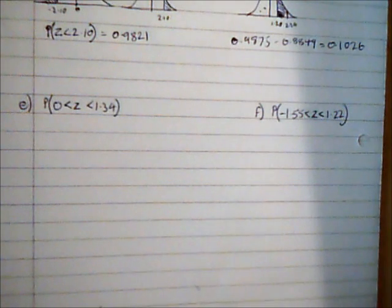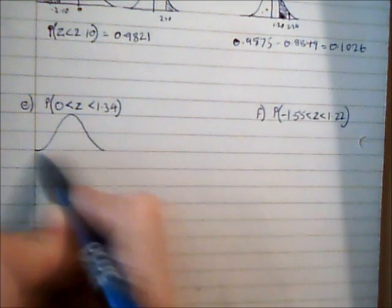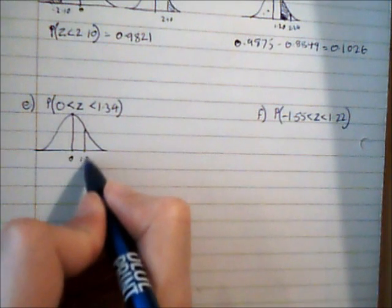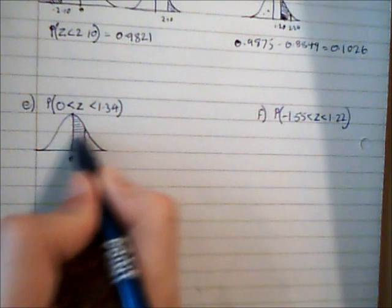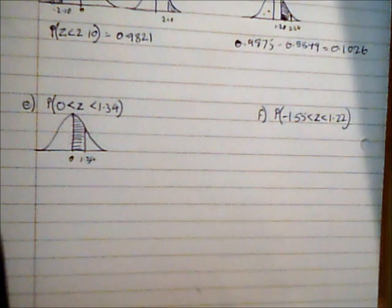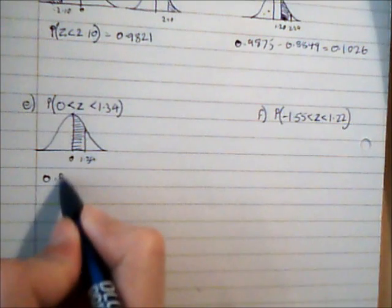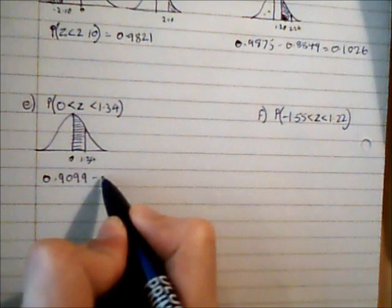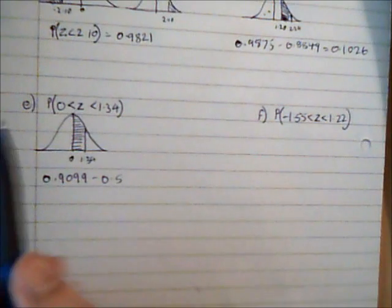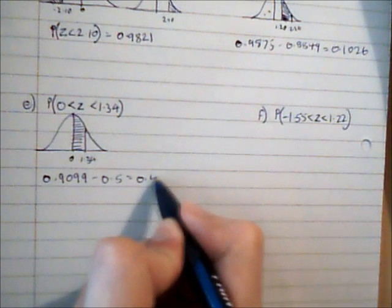The next question asks for P(0 < Z < 1.34). This is very similar to the last example. Looking up 1.34 in the table gives 0.9099. For Z = 0, which is the mean, P(Z < 0) = 0.5 by symmetry. So the answer is 0.9099 − 0.5 = 0.4099.